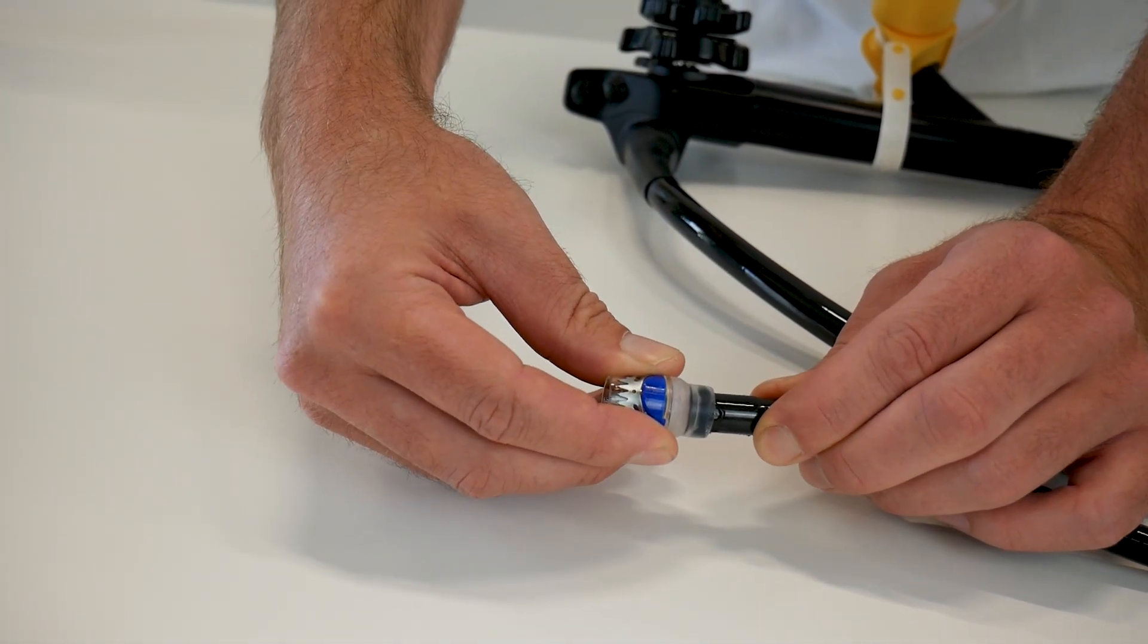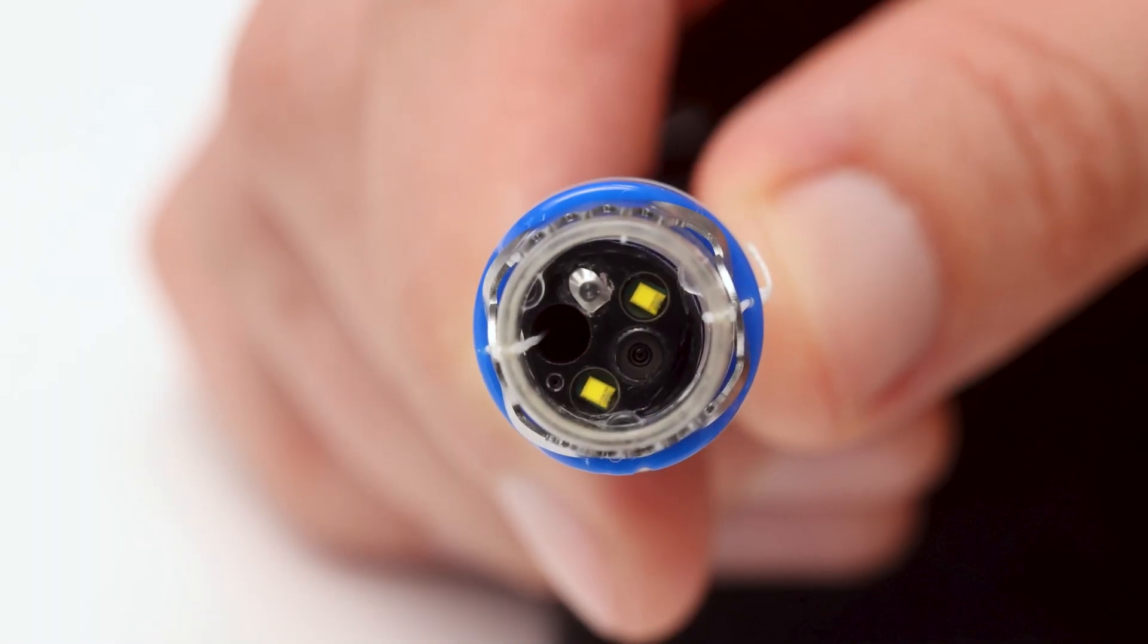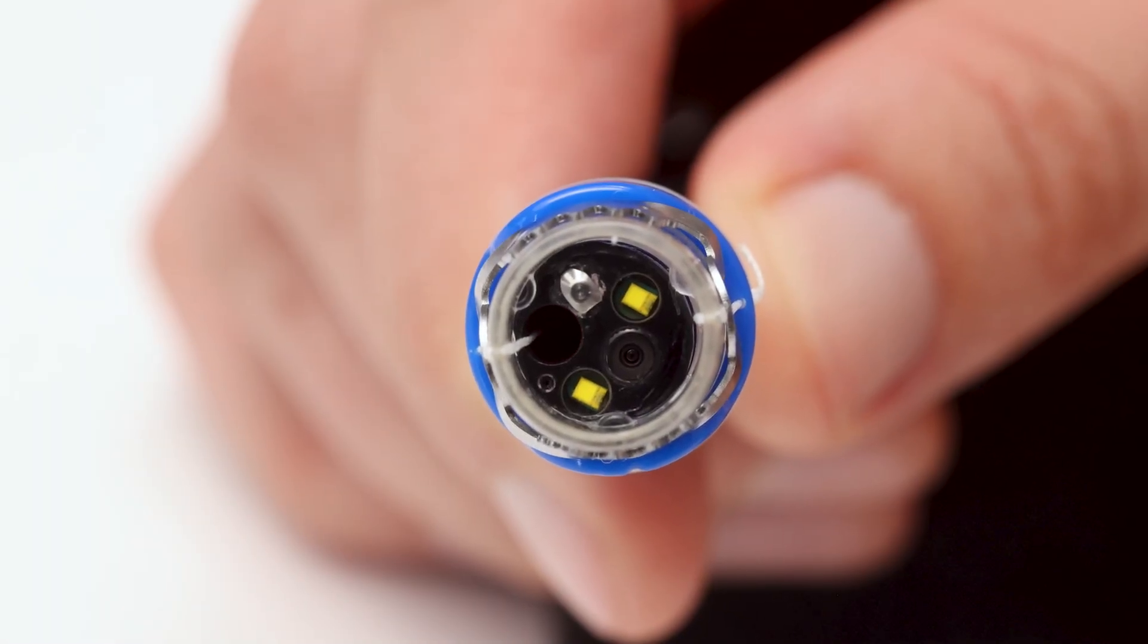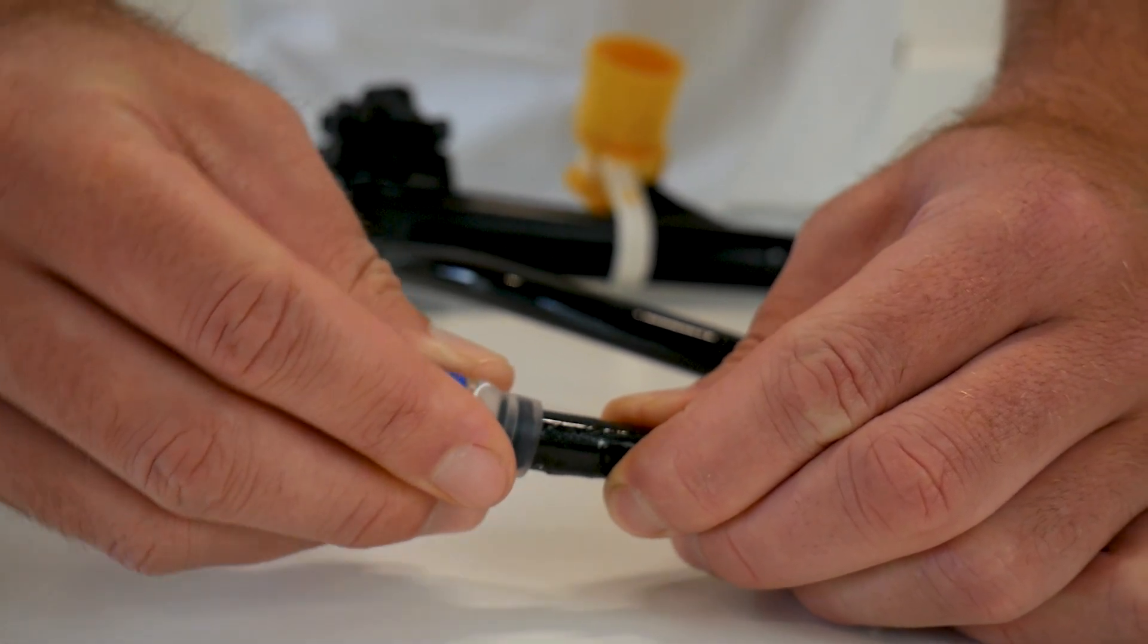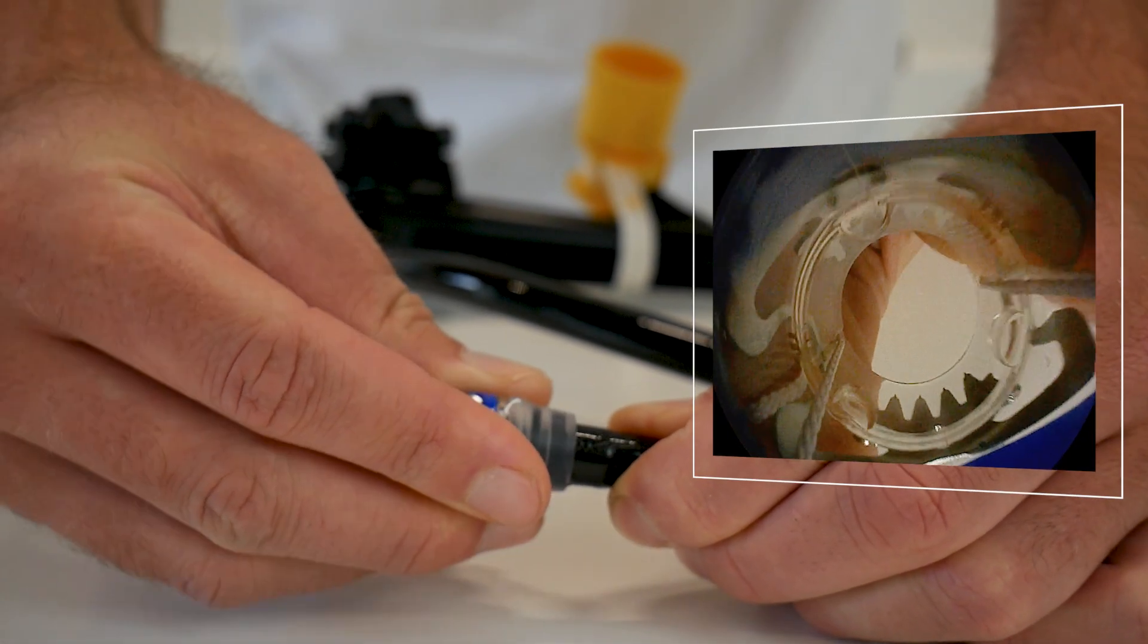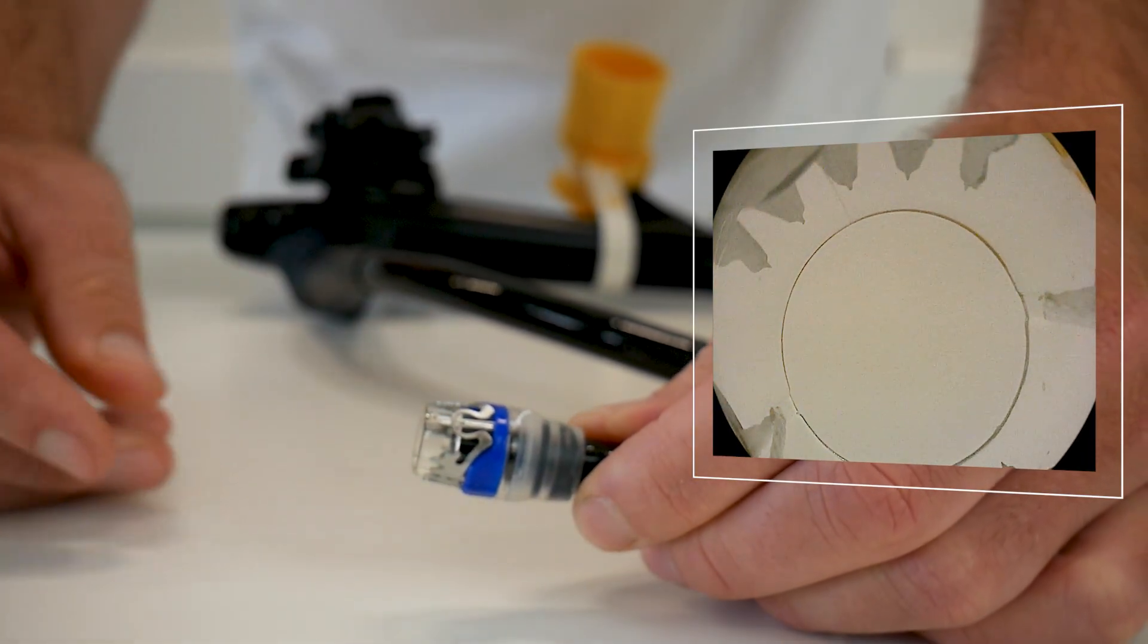Gently place the cap onto the endoscope tip and align it so that the release thread runs vertically through the working channel. Then push the cap onto the endoscope tip as far as it will go. The stoppers serve as a support for clip application and the cap depth limiter prevents too much tissue from being drawn into the cap.